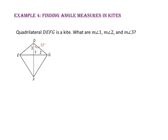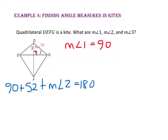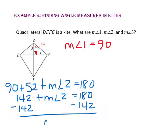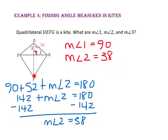In example 4, we will find angle measures in kites. Quadrilateral DEFG is a kite. What are the measures of angles 1, 2, and 3? Since the diagonals of a kite are perpendicular, the measure of angle 1 is 90. Using the triangle angle sum theorem, 90 plus 52 plus the measure of angle 2 equals 180, so 142 plus angle 2 equals 180, and the measure of angle 2 equals 38. Since diagonal DF creates two congruent triangles and bisects the angle, the measure of angle 3 is also 52.